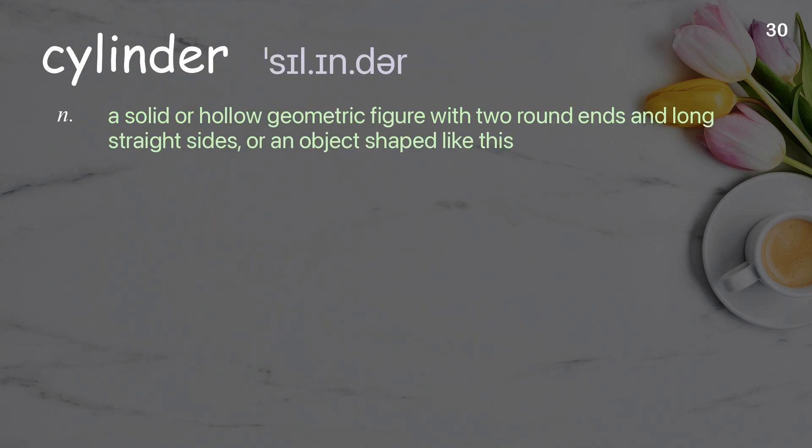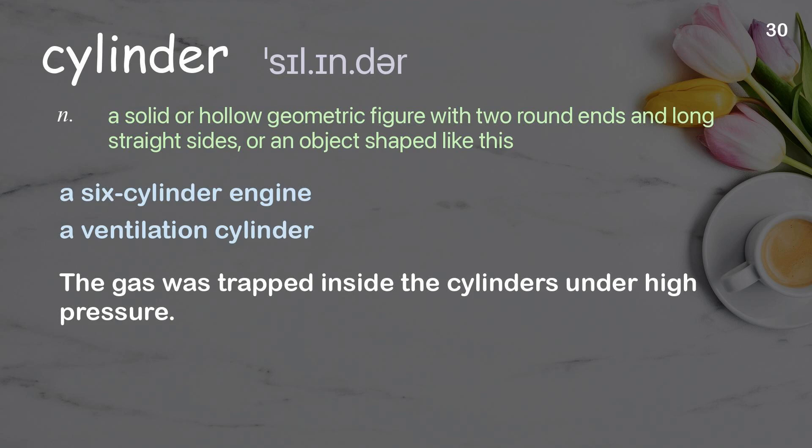Cylinder: a solid or hollow geometric figure with two round ends and long straight sides, or an object shaped like this. Examples: a six-cylinder engine, a ventilation cylinder. The gas was trapped inside the cylinders under high pressure.